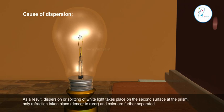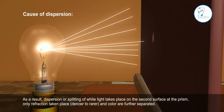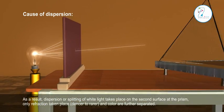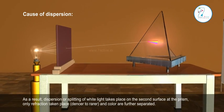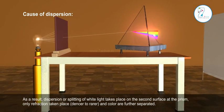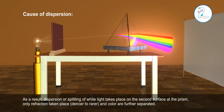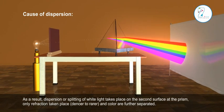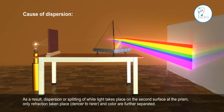As a result, dispersion or splitting of white light takes place. On the second surface of the prism, only refraction takes place, denser to rarer, and colors are further separated.